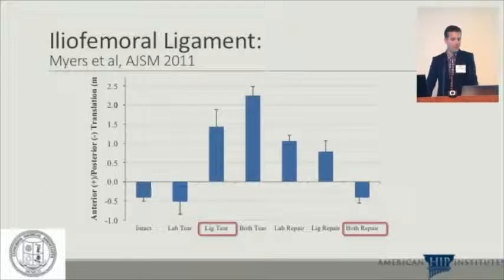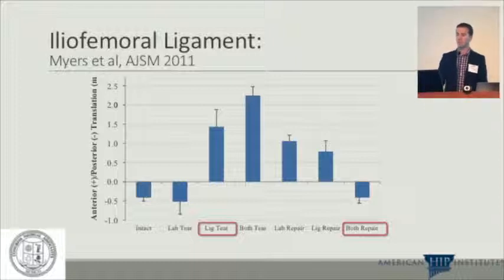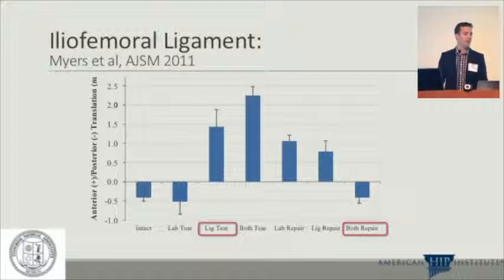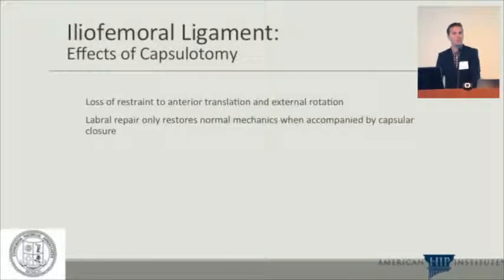Another study by Meyer and the group looked at labral tears and capsular ligament tears, examining anterior and posterior translation. With ligament tears there was a significant change. Repairing the labrum alone reduced translation somewhat, and repairing the ligament alone also helped, but when both were repaired it decreased further. Similarly for external rotation, a ligament tear caused a significant increase, and repair brought it back down. Basically, a capsulotomy causes you to lose restraint to anterior translation as well as external rotation, and labral repair only restores normal mechanics when accompanied by capsular closure.